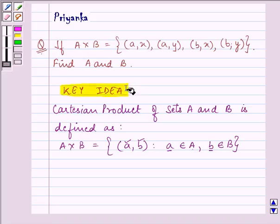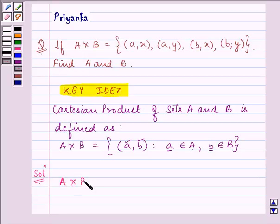We are given that A cross B equals the ordered pairs: (a,x), (a,y), (b,x), (b,y). And we have to find the sets A and B.